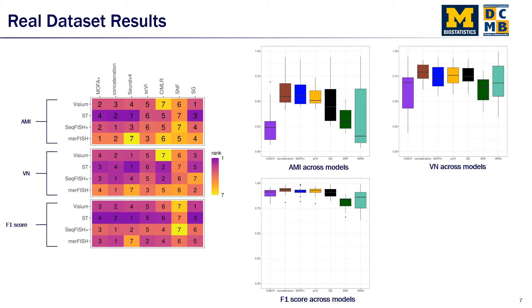Seurat version 4, which implements weighted nearest neighbors, tends to perform better for non-single cell resolution data sets, whereas SCVI does better at integrating single cell resolution data sets. And MOFA Plus tends to have a relatively more stable performance across different sequencing technologies. It's also worth mentioning that naive concatenation also does pretty well here.